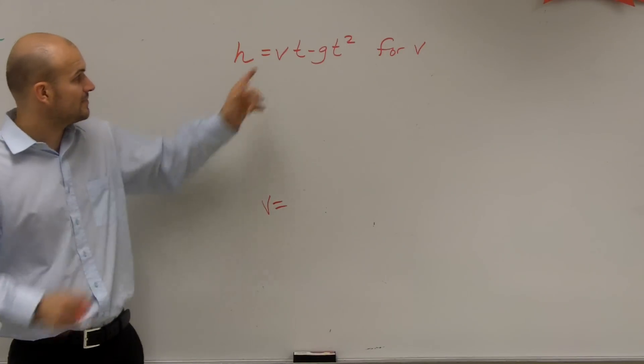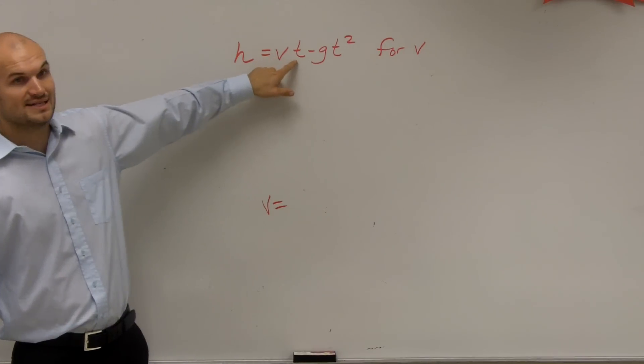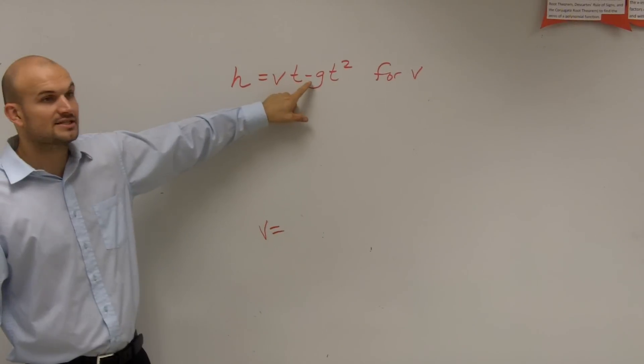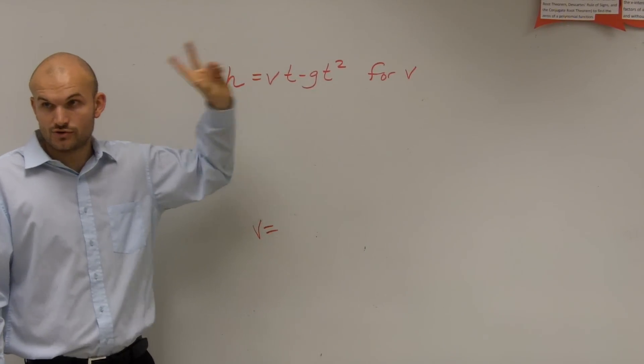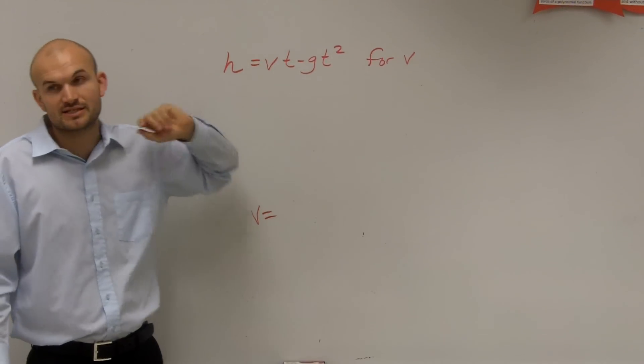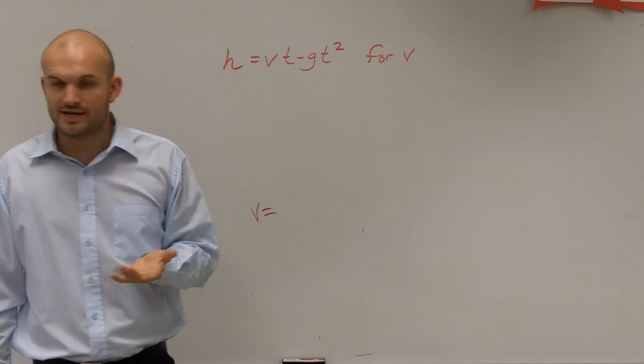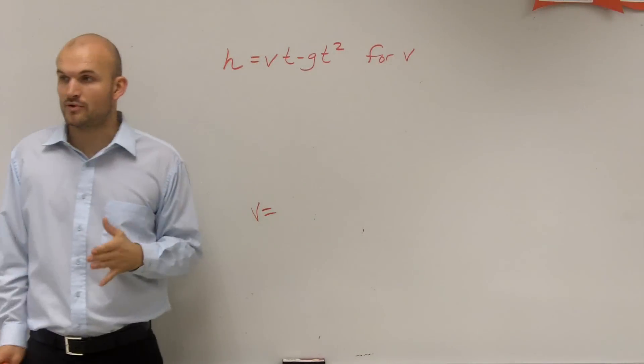There's a couple operations that are happening to v. It's being multiplied by t, and it's being subtracted by g t squared. There's two things happening - it's being multiplied and it's being subtracted. And remember, when we're solving equations, we always use the reverse order of operations.